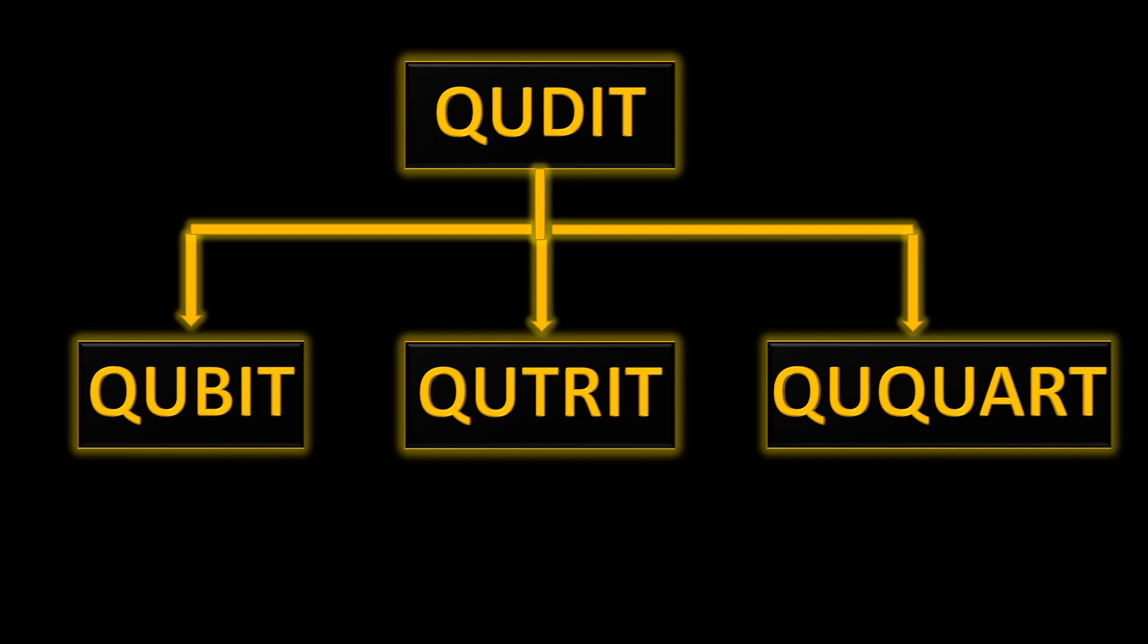So a qubit can actually do the work that qutrit is doing but a qubit will require more computational units than qutrit to do the same amount of work. So as you go up the order the complexity increases definitely, but the computational units that you require to do some computation decreases so the system actually becomes more and more powerful.